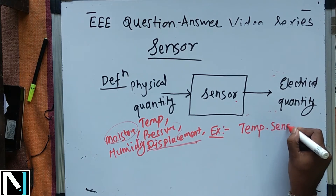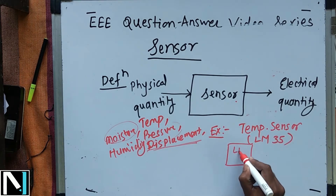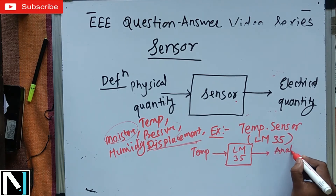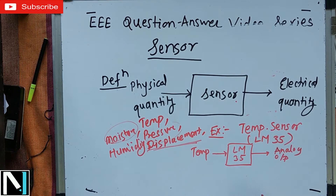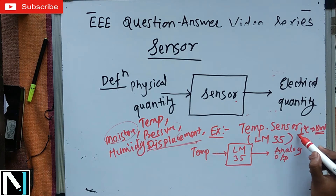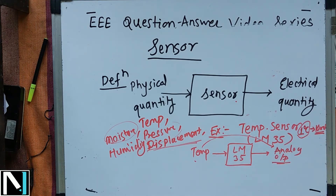For example, a temperature sensor — its IC is LM35. The role of LM35 is to sense the temperature and convert it into an analog output voltage. For every degree Celsius rise in temperature, the LM35 provides an output of 10 millivolts, which is the electrical quantity. Another example is a displacement sensor such as LVDT, which converts linear displacement into the respective analog voltage.